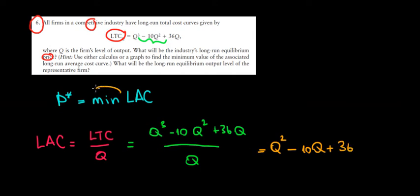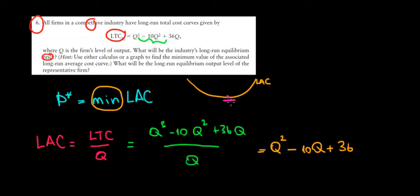Recall that we're looking for the minimum of the long-run average cost. The LRAC is a curve, and we're looking for its minimum point. Graphically, at that minimum point the slope equals zero — meaning the derivative of the long-run average cost with respect to quantity must equal zero.